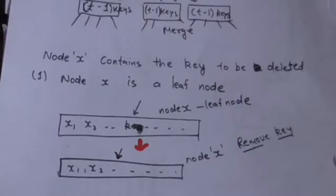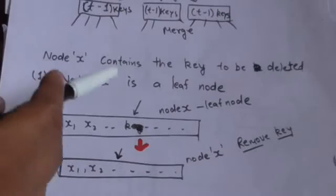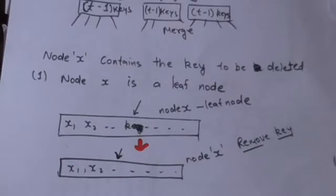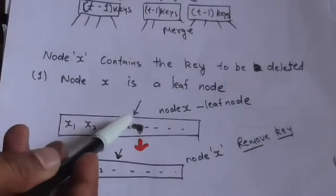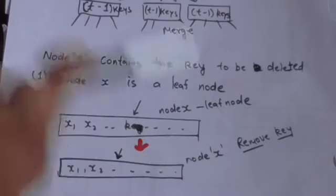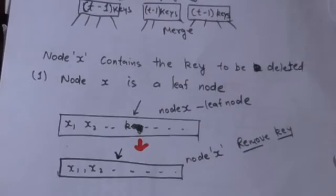Now, when we reach node X containing the key K to be deleted, there are two cases. The first case is when node X is a leaf node and it contains key K. In this case, we will simply remove key K from node X to delete it.